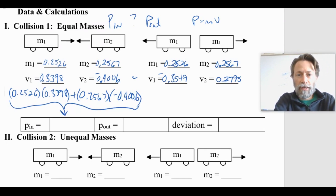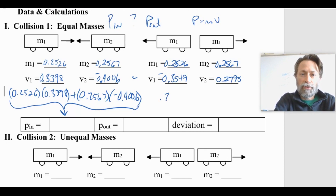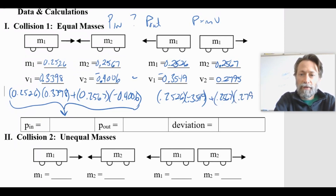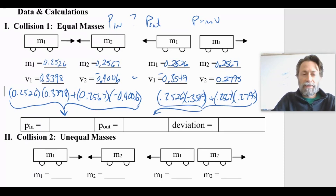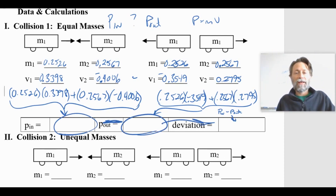We do the exact same thing on the other side to get momentum out. That's 0.2526 times negative 0.3549, plus 0.2567 times 0.2795. Put that into your calculator to get your momentum out. To find the deviation, we simply take momentum in minus momentum out. That difference is your deviation, and that's how you walk through each of the different trials for this lab.